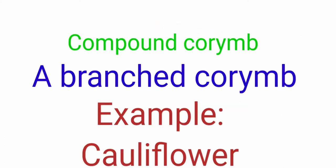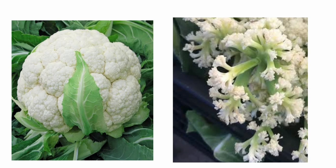Next one is the compound corymb. It is defined as a branched corymb, where the corymbs are attached to one main central axis, and that is called a compound corymb. The example is cauliflower. In the first picture you could see the whole cauliflower, and in the second picture you could find the arrow mark which indicates the branched corymbs which are attached to the one main rachis.